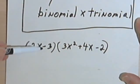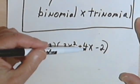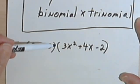This is 2x minus 3 times the trinomial 3x squared plus 4x minus 2. And actually something like this is really pretty easy.